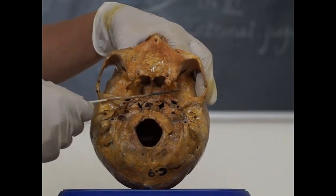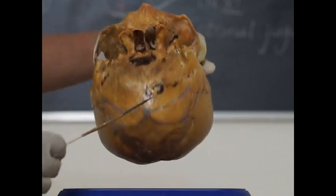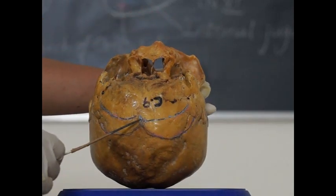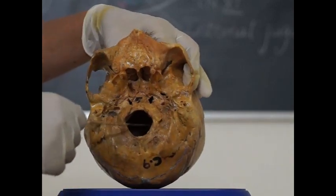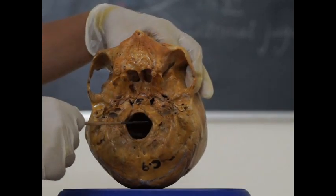Posterior part extends from the anterior margin of foramen magnum until the external occipital protuberance and superior nuchal line on either side. In the middle, this is the large foramen called as foramen magnum.